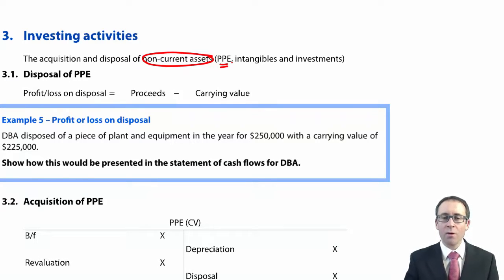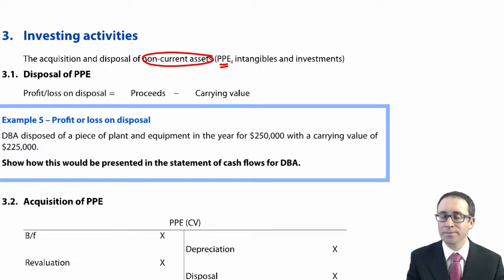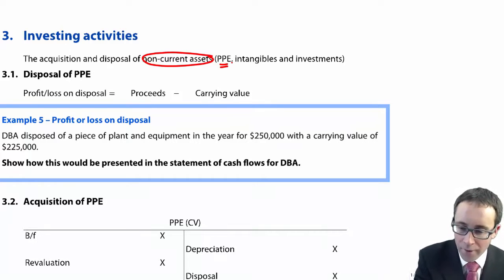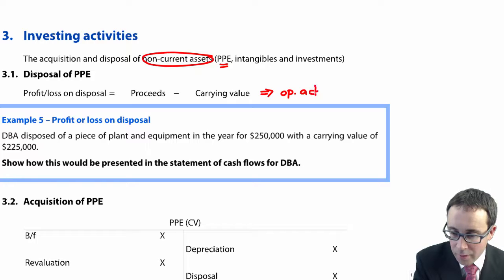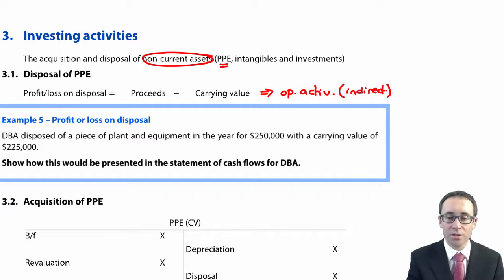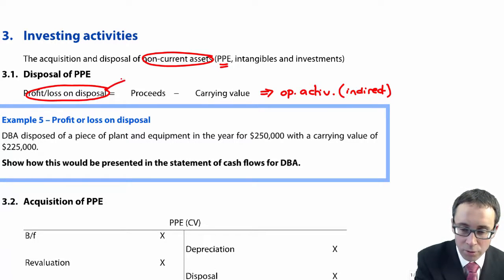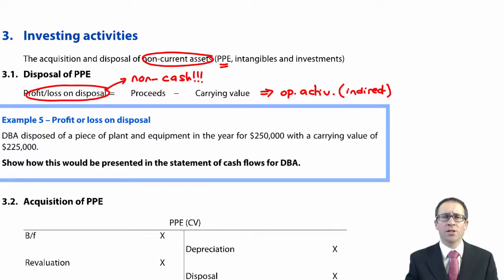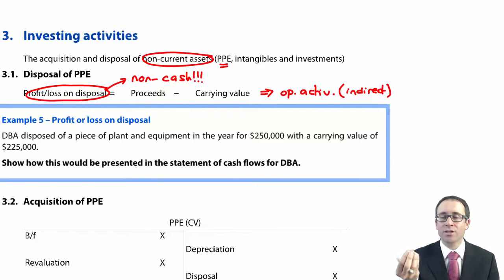The first bit — although I refer to it as investing activities — the disposal of PPE isn't a cash flow that actually appears within the investing activities section. It actually appears within your operating activities, because using the indirect method of working out your cash from operations, you have to adjust for any non-cash expenses — being depreciation — but also a profit or loss on disposal. That is non-cash. So if you have a loss on disposal, that's a non-cash expense that will need to be added back. If you have a profit on disposal, that's non-cash income which has pushed up your profits but hasn't increased your cash, so you will need to deduct it.